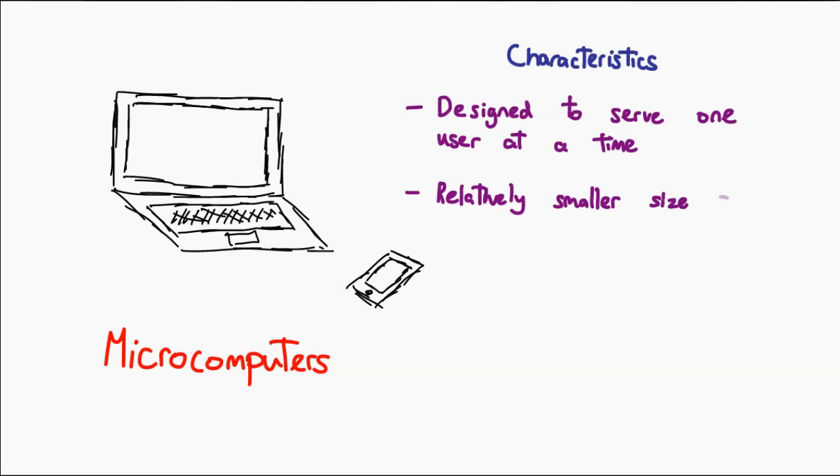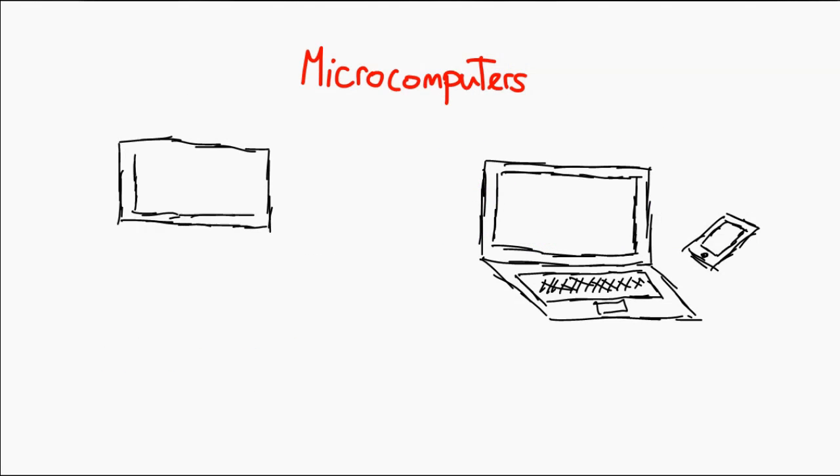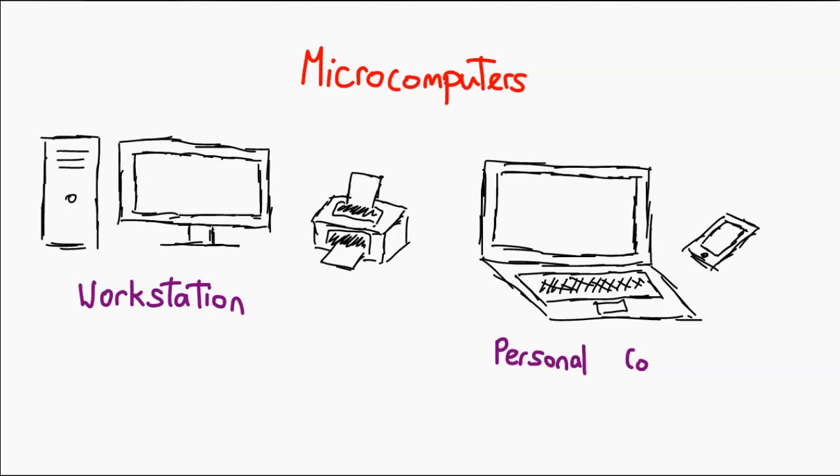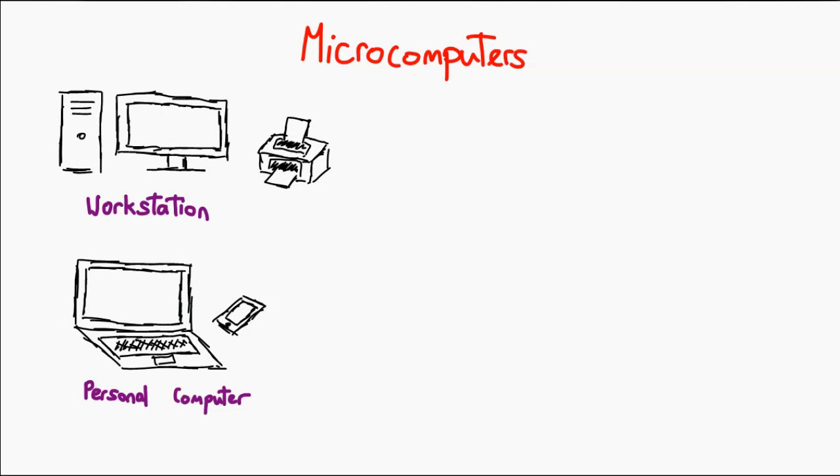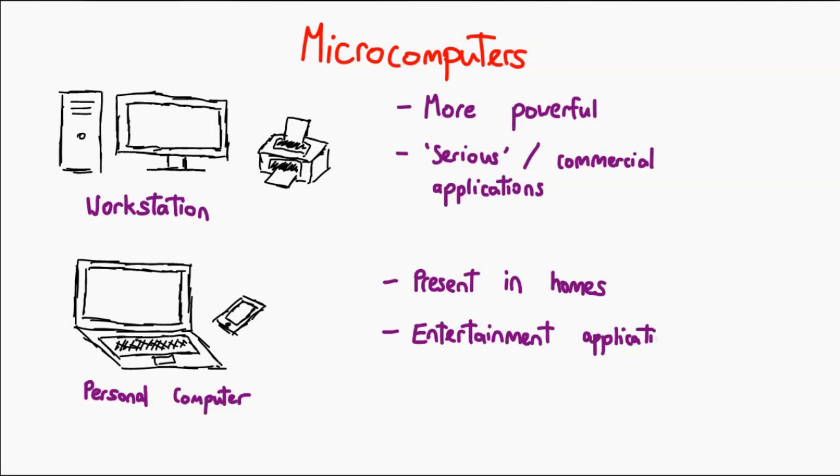Of course, other characterizing features of a microcomputer are its smaller size and its lower cost, at least in comparison to the other classes. In fact, if you want to be even more precise, a microcomputer can be further broken down into two classes: workstations and personal computers. The general gist of the idea for these two classifications is workstations are supposed to be more powerful and used in the workplace for commercial purposes, whereas personal computers, normally shortened to PCs, exist at home and are used for entertainment and lighter tasks.